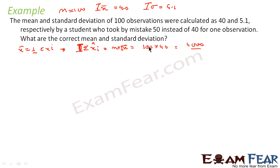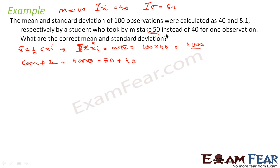The incorrect sum is 4000. Now the correct sum = incorrect sum − 50 + 40. Why? Because the student mistook 50 instead of 40 — the correct value was 40, so we add 40 and remove the incorrect value 50. In a bucket, if one thing is wrong, you take out the wrong thing and put the right thing.